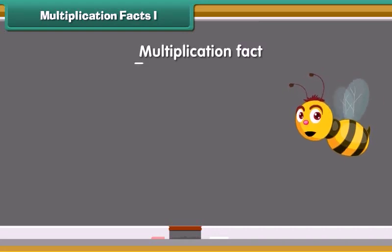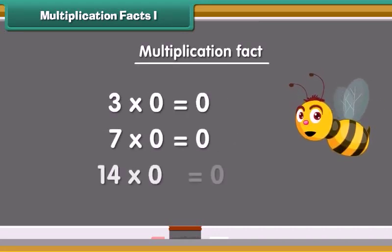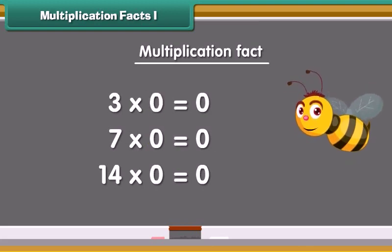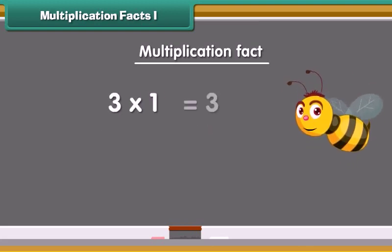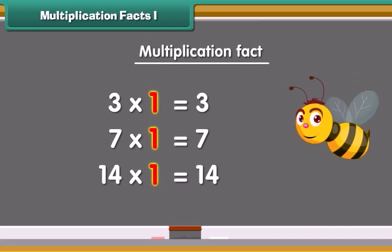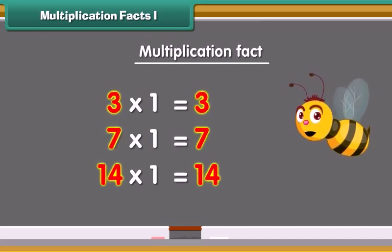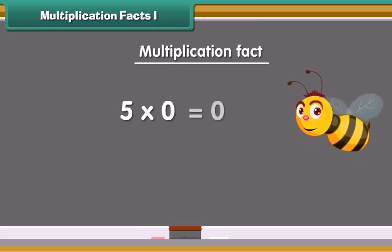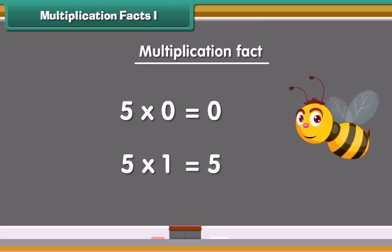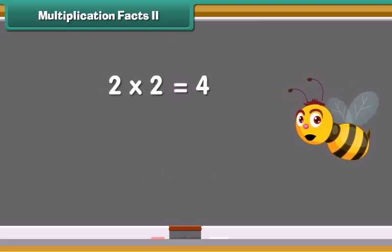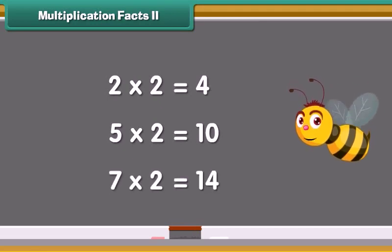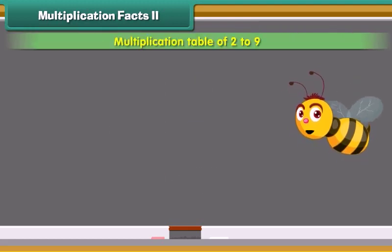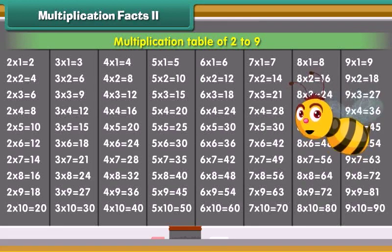We start with some multiplication facts. Any number multiplied by 0 is always equal to 0. A number multiplied by 1 is equal to the same number. For example, 5 multiplied by 0 is 0, and 5 multiplied by 1 is 5. The multiplication tables are based on the multiplication facts of different numbers. The multiplication table of 2 to 9 is displayed on the screen.